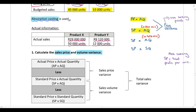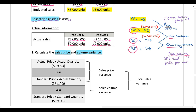Comparing the actual mix to the standard mix gives the mix variance, and the remaining balance is the quantity variance. The SP here is still the standard profit per unit because we are using absorption costing — we are just splitting the volume variance into more detail. We have already performed two of the three calculations when calculating the volume variance, so this is the only new calculation needed.